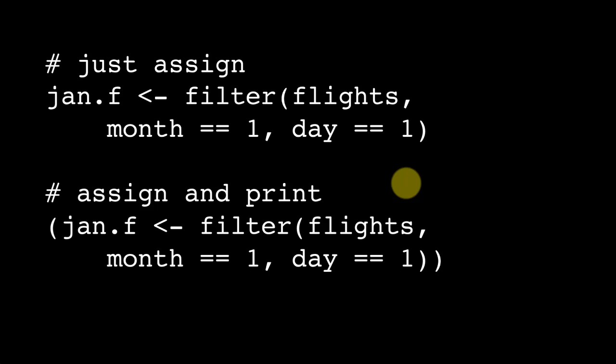An easy way to do that is to simply surround our whole command with parentheses. So we have taken this earlier command and just put parentheses around it, which is why you see there are two parentheses at the end here. The result is now the new tibble is assigned to the variable jan.f. Not only that, the result is also printed on the console for us to see.